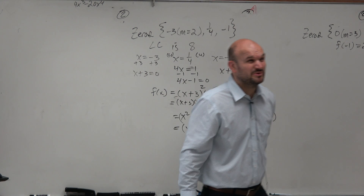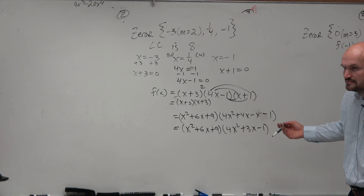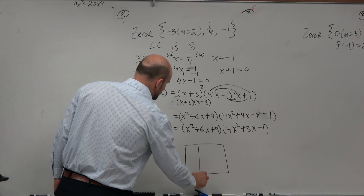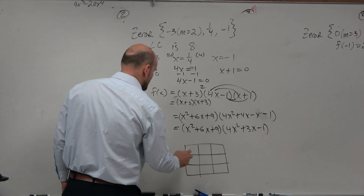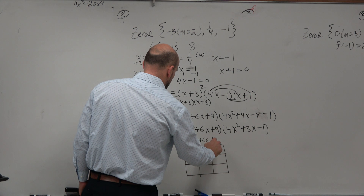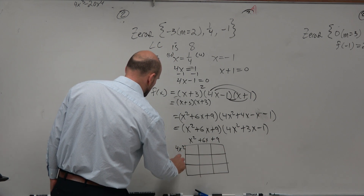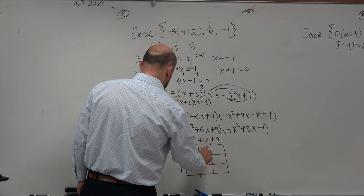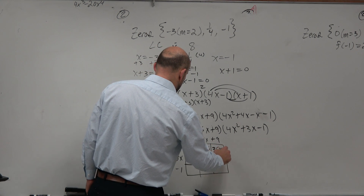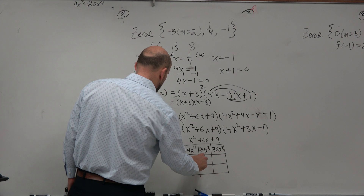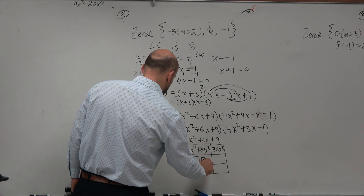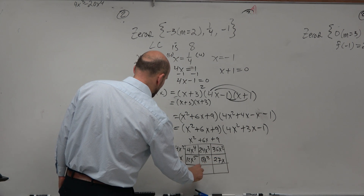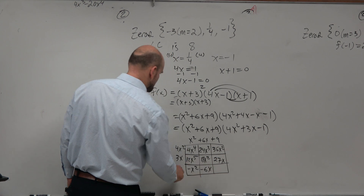Now we have a trinomial times a trinomial — (x² + 6x + 9)(4x² + 3x − 1) — which doesn't look like fun, but we can do it. My advice would be to use the box method. That gives us: 4x to the 4th, 24x cubed, 36x squared, 3x cubed, 18x squared, 27x, negative x squared, negative 6x, and negative 9.